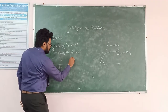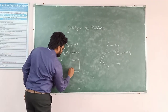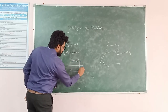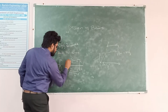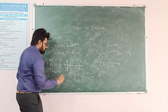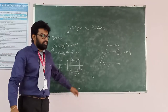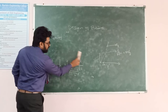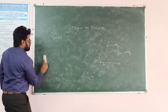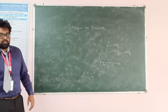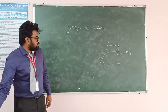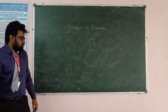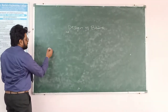In double reinforced beams, the reinforcement is placed on both the compression side and the tension side. This is known as a double reinforced beam. Before going to design, there are a few types of sections to understand.